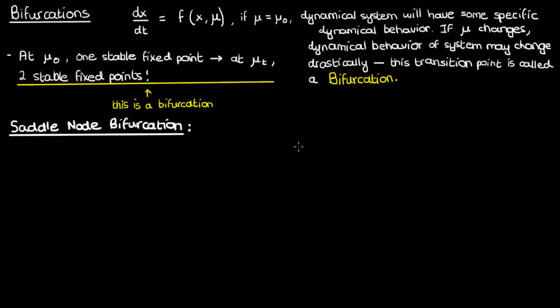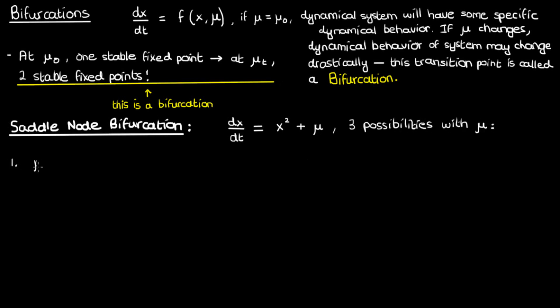Suppose we have a dynamical system of the form dx/dt equals x² + μ. In this case there are three possibilities we can have with μ: μ can be positive, μ can be zero, and μ can be negative.